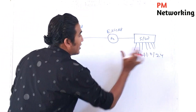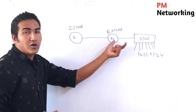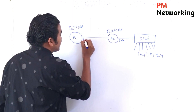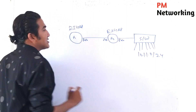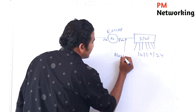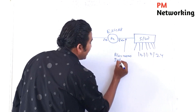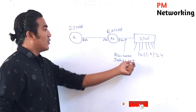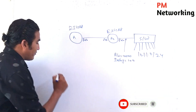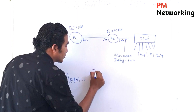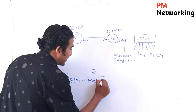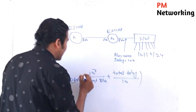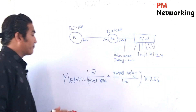We have one LAN connected to Router R2. The interface of this link is FastEthernet 0/0 and FastEthernet 0/1. Suppose the bandwidth of this link is 10,000 and the delay of this link is 100. The formula for EIGRP metric is: 10 raised to the power 7 divided by the least bandwidth, plus total delay divided by 10, and the whole multiplied by 256.